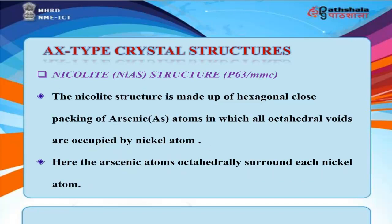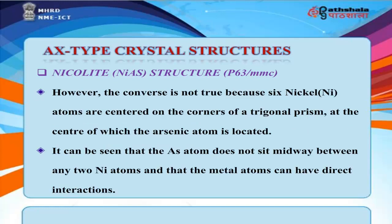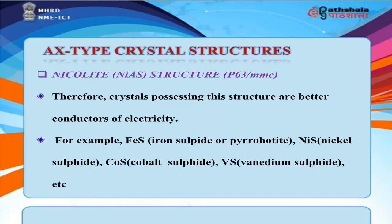The nicolite (NiAs) structure is made up of hexagonal close-packing of arsenic atoms, in which all octahedral voids are occupied by nickel atoms. The arsenic atoms octahedrally surround each nickel atom. However, six nickel atoms are centered on the corners of a trigonal prism, at the center of which the arsenic atom is located. The arsenic atom does not sit midway between any two Ni atoms, allowing direct metal-metal interactions. Crystals with this structure are therefore better conductors of electricity. Examples include FeS (iron sulfide/pyrrhotite), NiS (nickel sulfide), CoS (cobalt sulfide), and VS (vanadium sulfide).